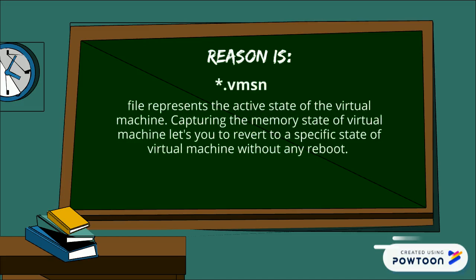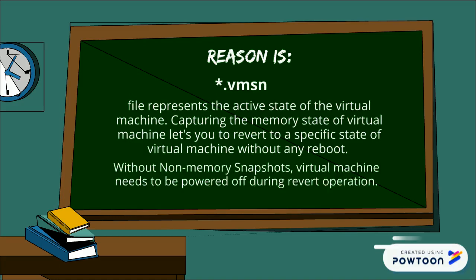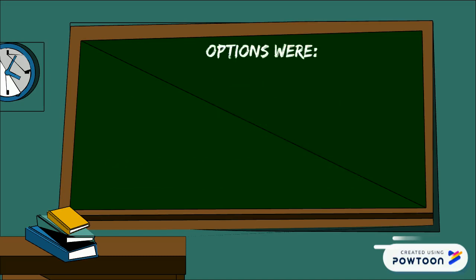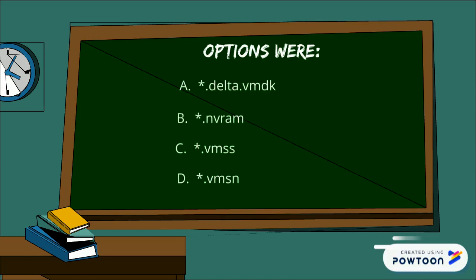The .vmsn file represents the active state of the virtual machine, capturing the memory state of the virtual machine, letting you revert to a specific state without any reboot. Without memory snapshots, the virtual machine needs to be powered off during the revert operation.